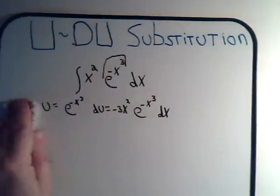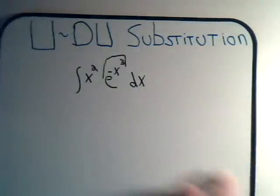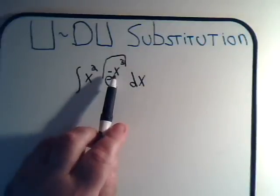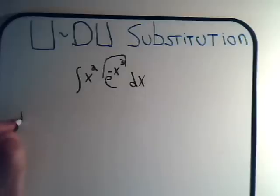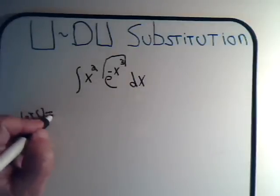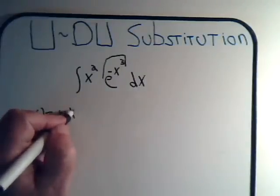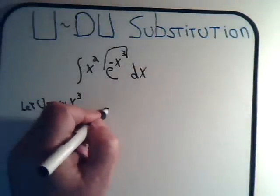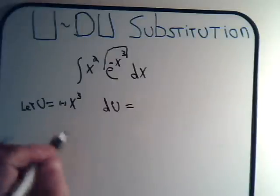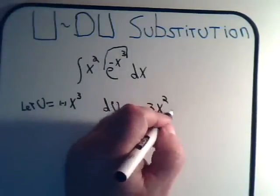So when you look the problem over, hopefully it will be clear, this has to be U. And in fact, if I say let U be equal to minus x cubed, when I take that derivative, or differential here, DU then is minus 3x squared dx, which is what we have here.